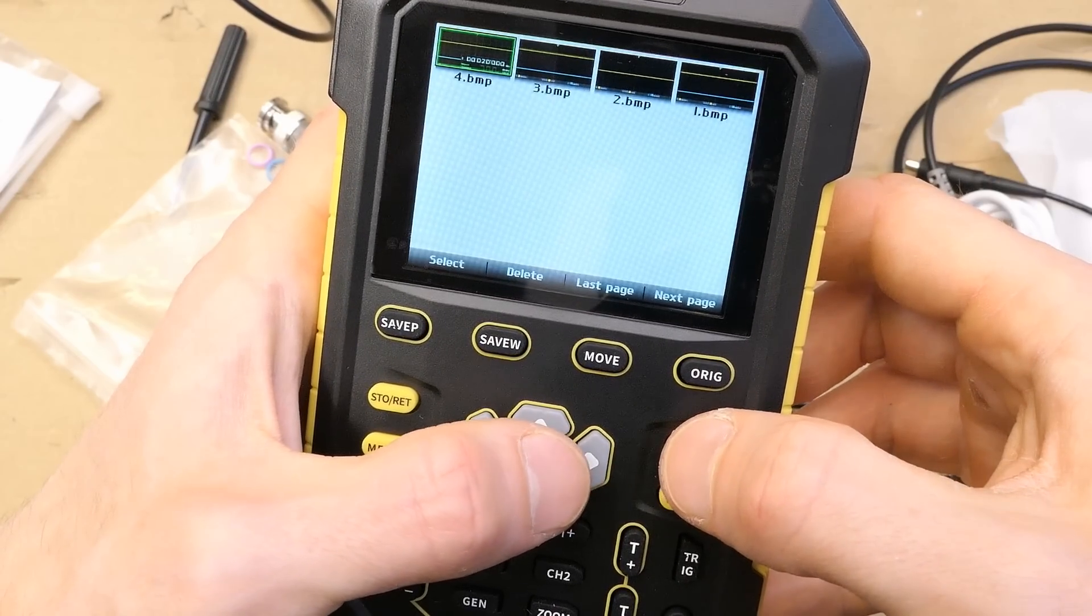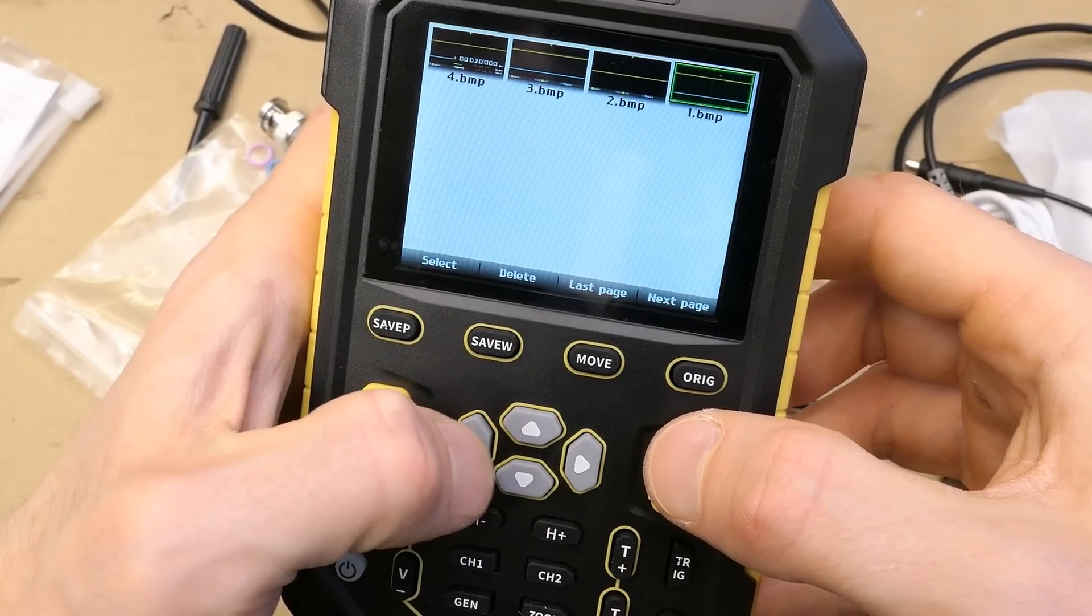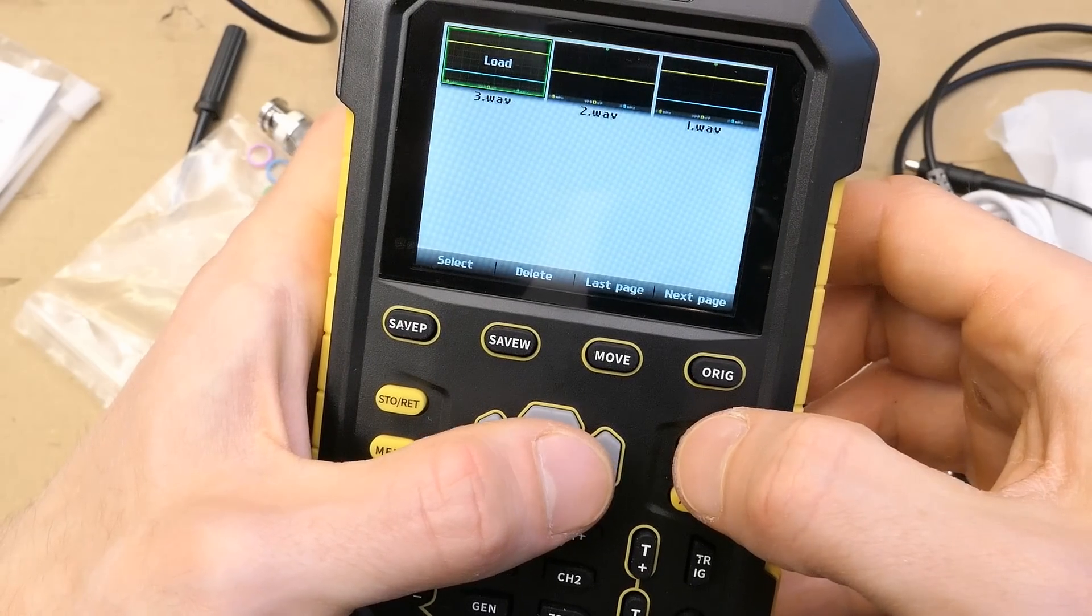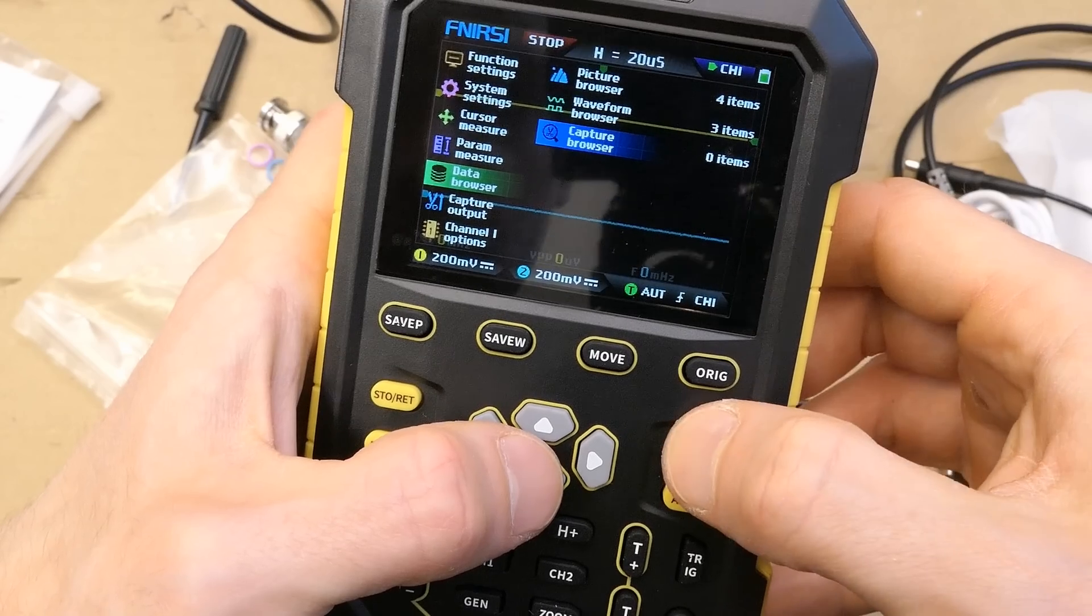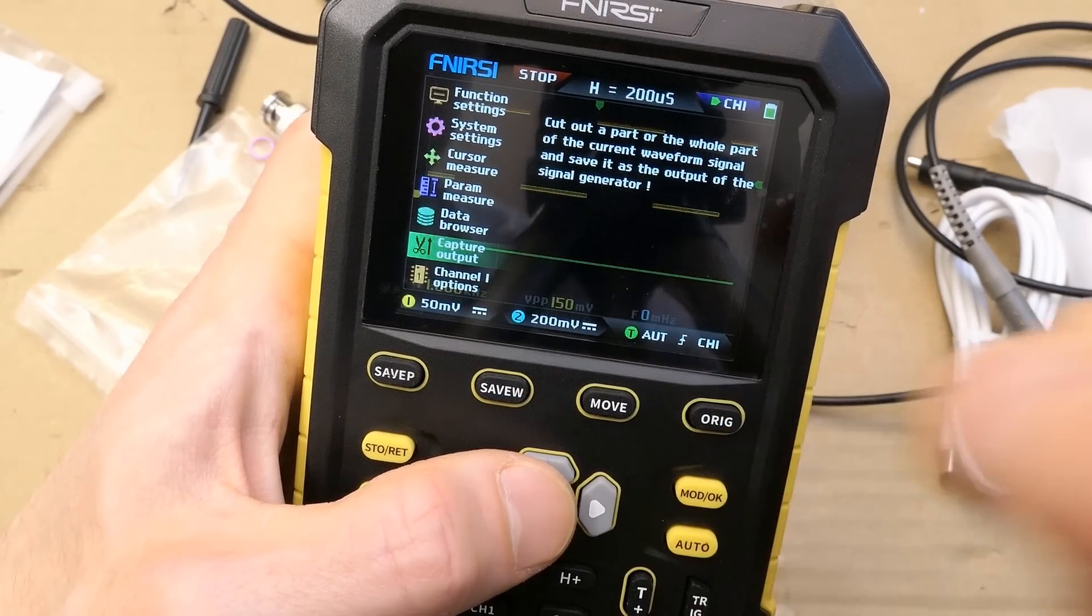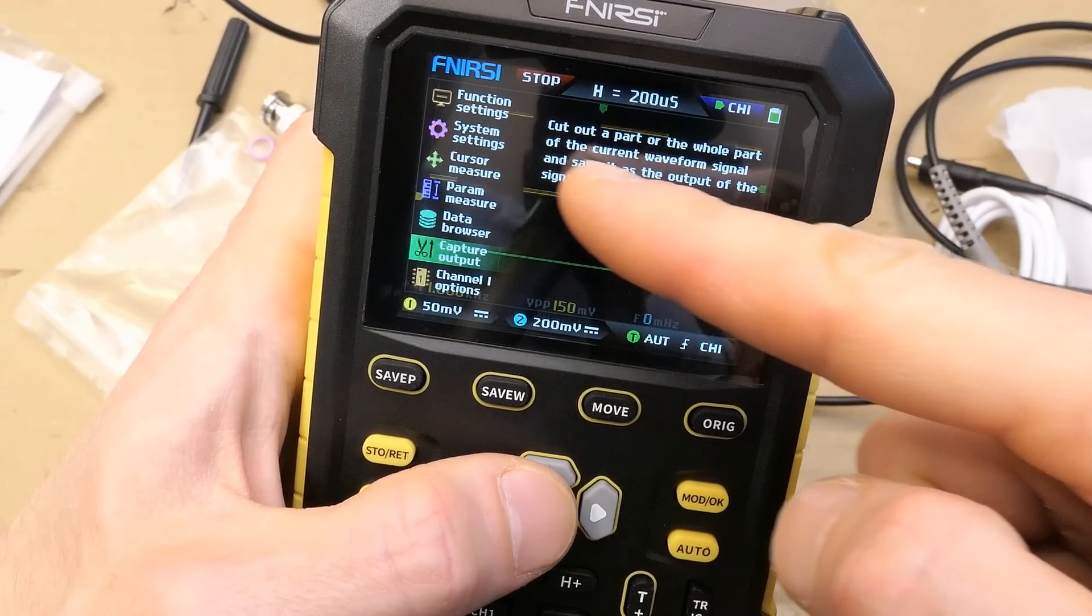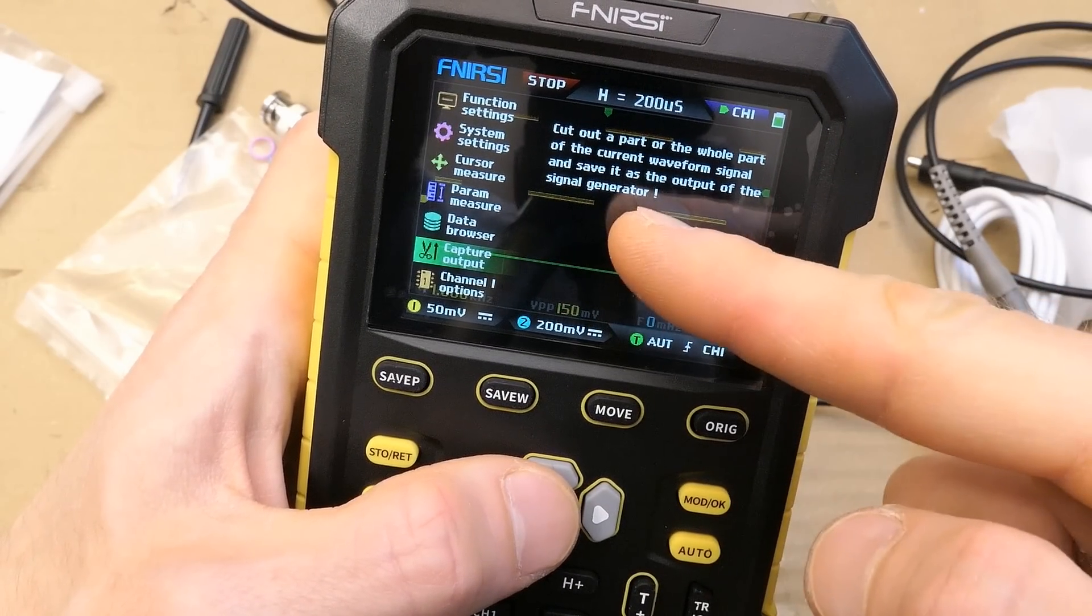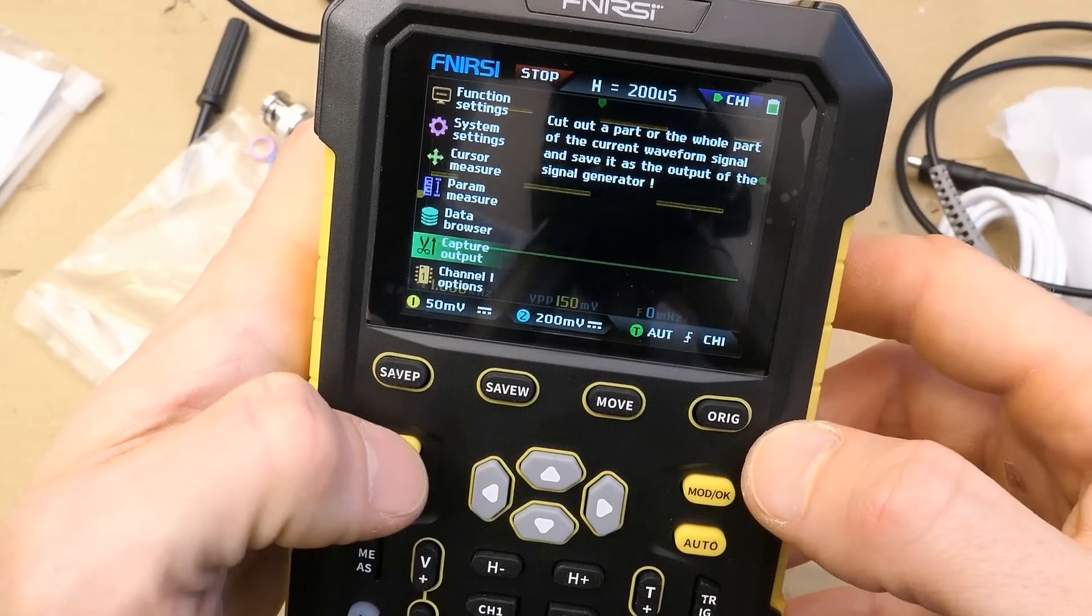Data browser, picture browser, this is basically the screenshots I made, you can see them here, waveforms I saved here, capture browser, there's nothing saved here yet, capture output, cut out a part, or the whole part of the current waveform signal, and save it as the output of the signal generator, this looks interesting.